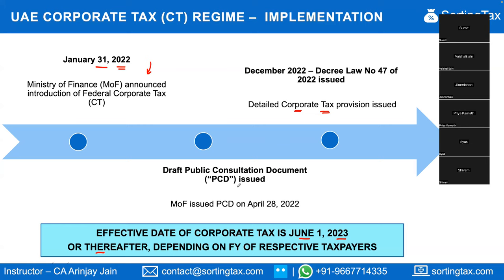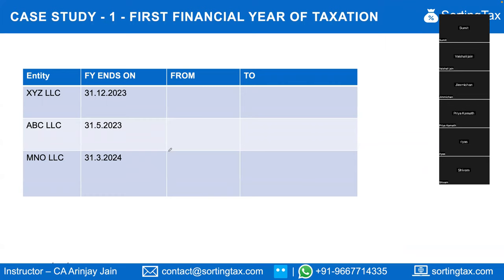The effective date of UAE corporate tax is June 1, 2023 or thereafter. Unlike many other countries where you have a defined tax period, in UAE, the tax period is governed by what financial year you are already following. There is an option under the UAE corporate tax provisions whereby you can change your financial year for tax purposes as well, which we will cover in a later session.